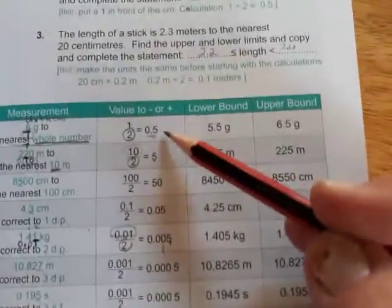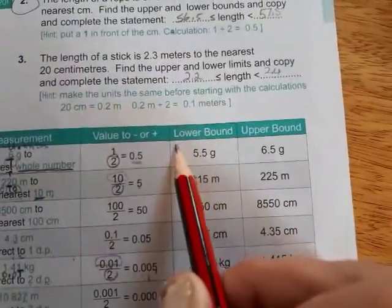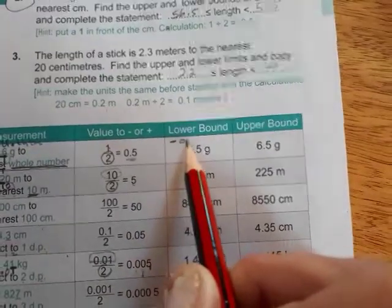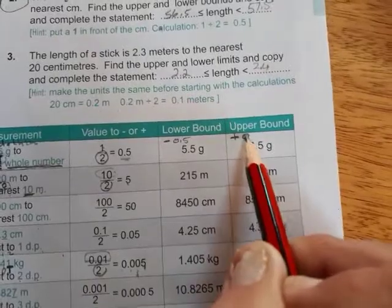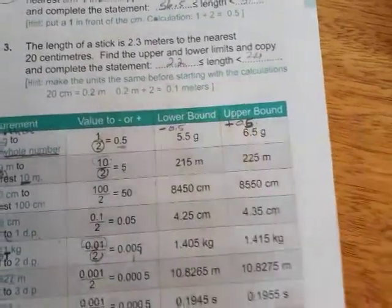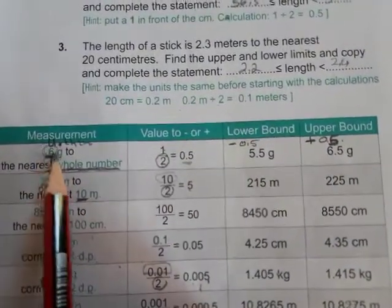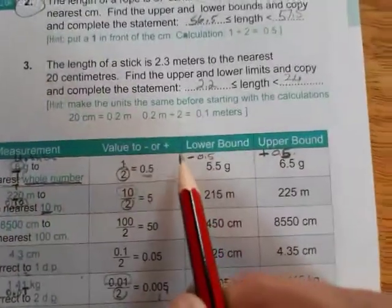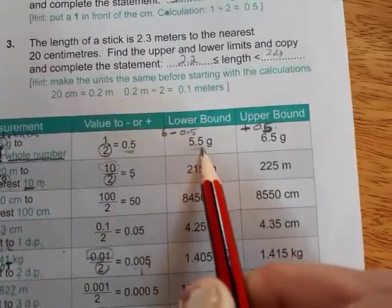And then, to calculate the lower bound and the upper bound, remember, you're just simply going to subtract 0.5. Here, you will add 0.5. I'm sorry, 5, to the number that was given. So what is the number? The number that was given was 6. So here, you have 6 minus 0.5, which gives you 5.5.